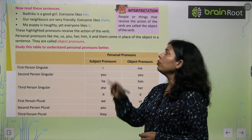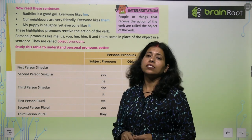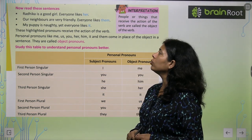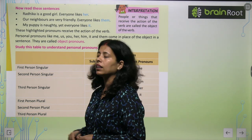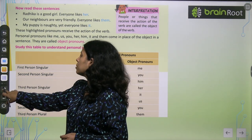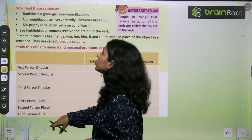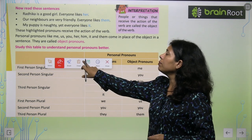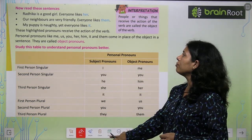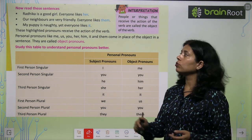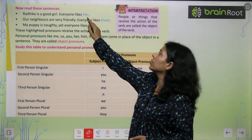Now read these sentences. Radhika is a good girl — everyone likes her. Our neighbours are very friendly — everyone likes them. Here we see the pronouns her and them.